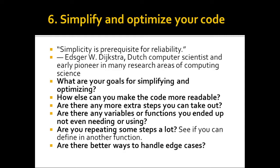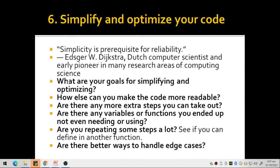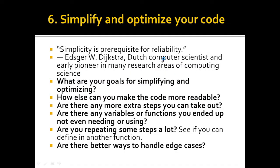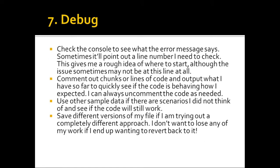Other optimization questions to ask: Are there extra steps you can remove? Are there variables or functions you declared but ended up not needing? Are you repeating some steps — if so, can you define them in a separate function? Are there better ways to handle edge cases, such as negative numbers, positive numbers, or extremely large values?